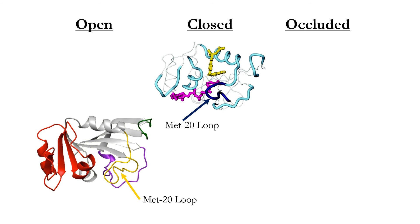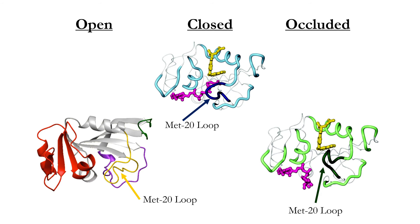After that proton transfer converts dihydrofolate into tetrahydrofolate, the MET20 loop changes conformation once again to its occluded position. In the occluded conformation, the MET20 loop changes its position so that it moves into the portion of the active site where the nicotinamide ring binds, causing steric hindrance. This high energy conformation causes DHFR to release the newly formed tetrahydrofolate.